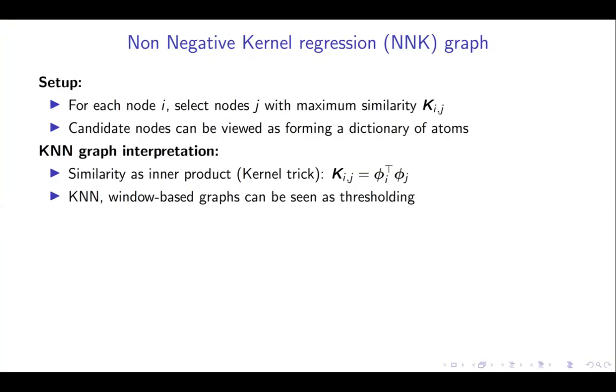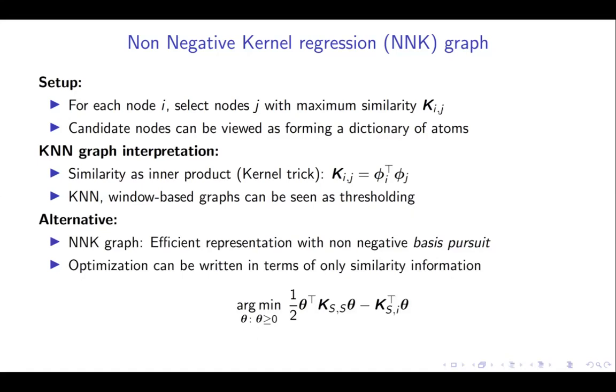To briefly introduce non-negative kernel regression graph, we outline here the basic idea behind the graph framework. Consider this setup. For each node i, select node j with maximum kernel similarity value. These selected nodes can be considered to form a locally adaptive dictionary. Now, observing similarities as inner products in a kernel-Hilbert space, we see that a k-nearest neighbor approach follows a thresholding-like process wherein selecting k maximally correlated atoms in the dictionary formed. This is suboptimal from a signal processing perspective. As an alternative, NNK graph poses the problem in the form of non-negative basis pursuits to obtain an efficient representation. The optimization involved in NNK graph can be written in terms of only similarity information.